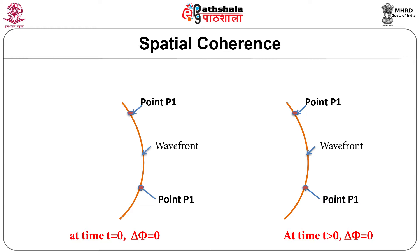In practice, if the points lie within some area around P1 and have good phase correlation, then the wave has partial spatial coherence. So, in partial spatial coherence, for any point P, there will be a suitably defined area SCP called the coherence area. Lasers have a high degree of spatial coherence as compared to conventional light sources.